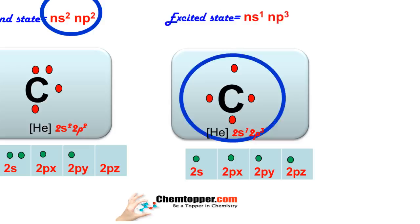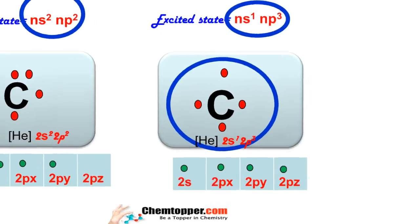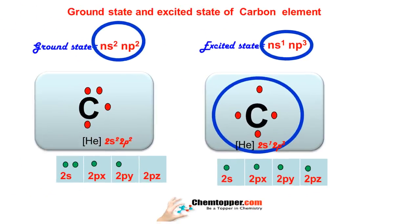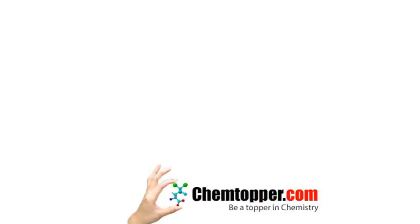All group 4A elements have a general electronic configuration of ns¹ and np³ in their excited state, and can be represented the way we have done for carbon. You can see the difference between the excited state and ground state electronic configurations. In this video we have learned how to draw Lewis dot symbols of group 4A elements of the periodic table.